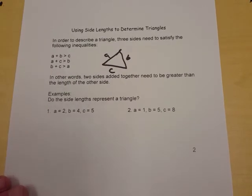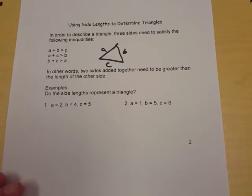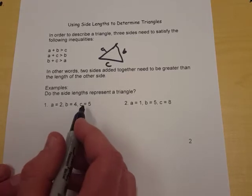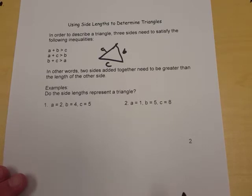When we think about doing an SSS triangle and we're trying to find the missing angles, we should first look at the side lengths and see if it actually makes a triangle.